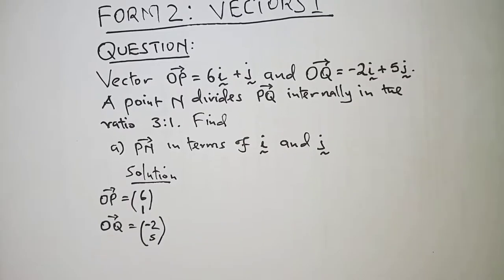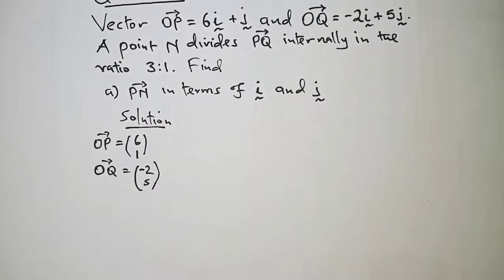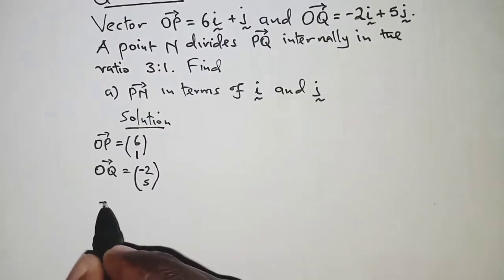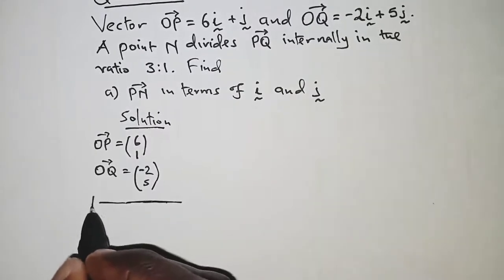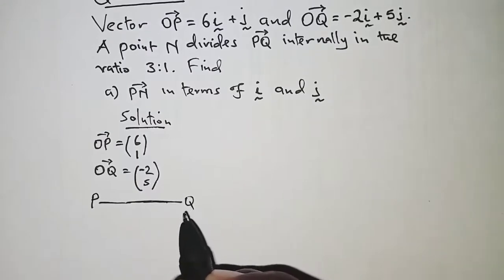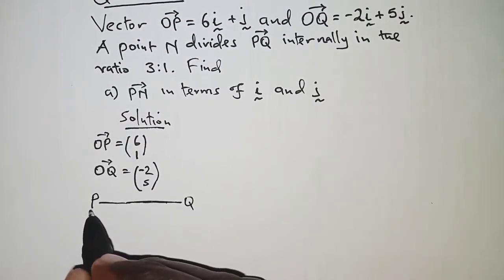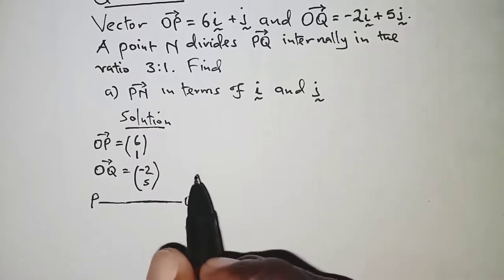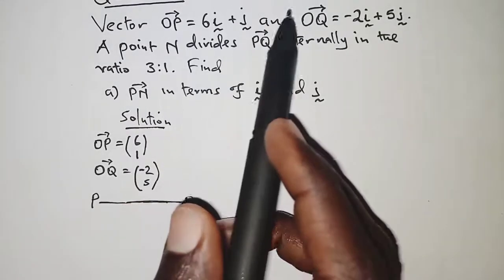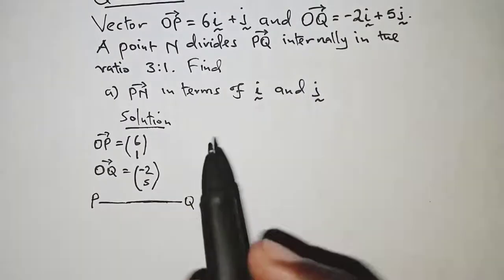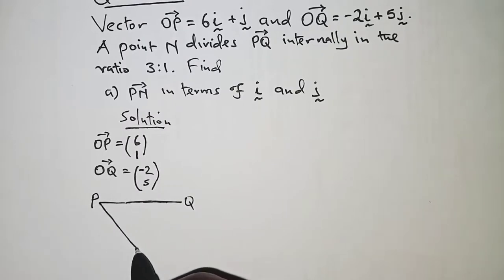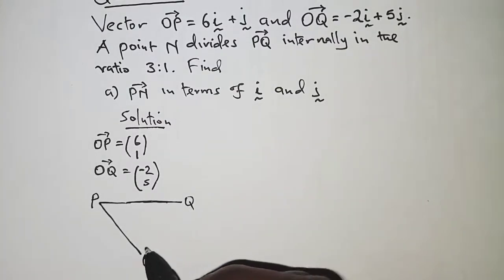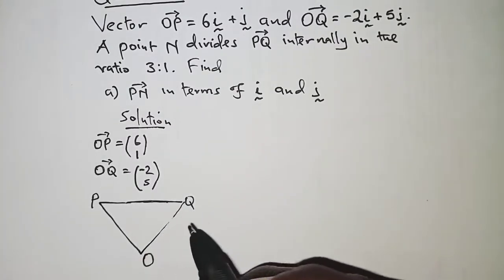So next we will interpret this in diagrams. If we consider PQ as a vector, then the position vectors of P and Q, which we had already been given, OP is a position vector. So OP simply means locating P from the origin O and OQ means locating Q from the origin.